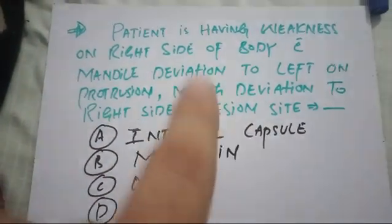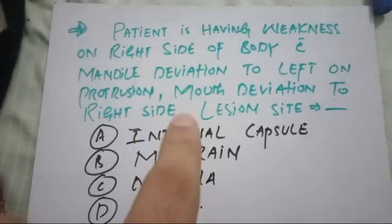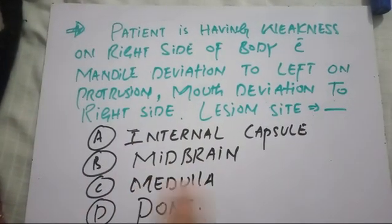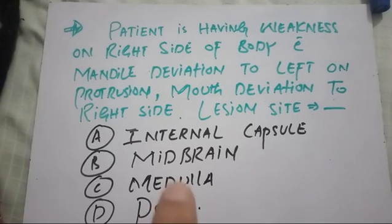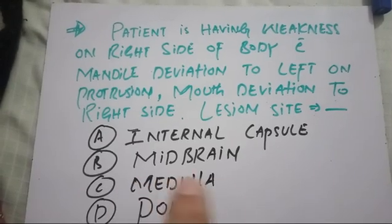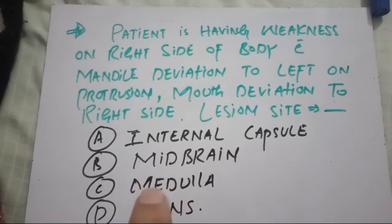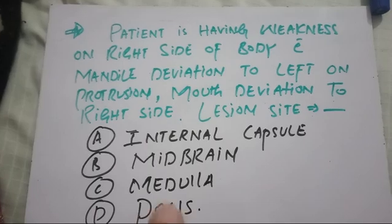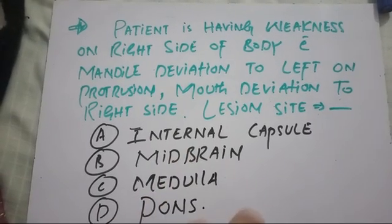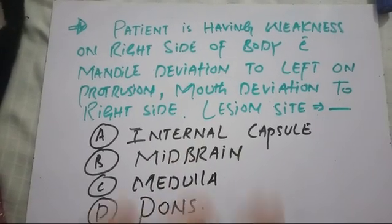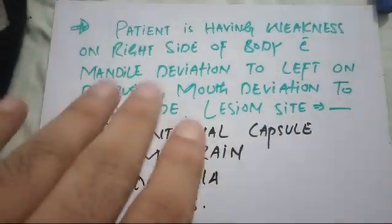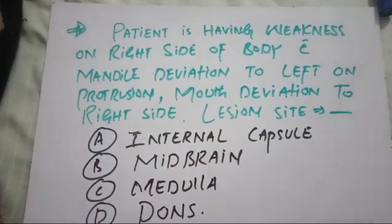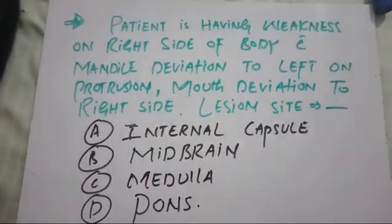There is nothing mentioned about dysarthria, dysphagia, loss of gag reflex, or Horner syndrome, which occur in the lateral medullary syndrome. In pontine stroke we have involvement of the fifth, sixth, seventh, and eighth nerves. So weakness of the body with involvement of these nerves means pontine stroke.